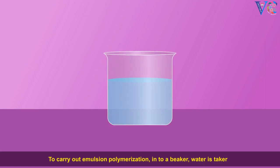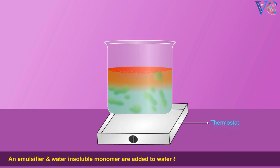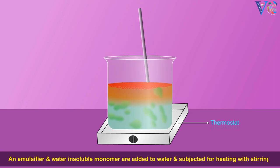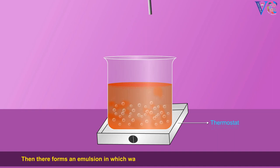To carry out emulsion polymerization, into a beaker, water is taken. An emulsifier and water-insoluble monomer are added to water and subjected for heating with stirring. Then there forms an emulsion in which water-insoluble monomer droplets are dispersed.